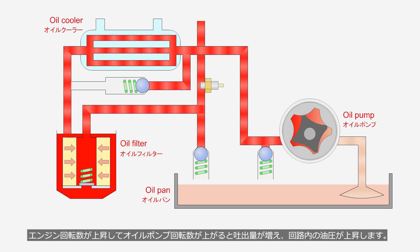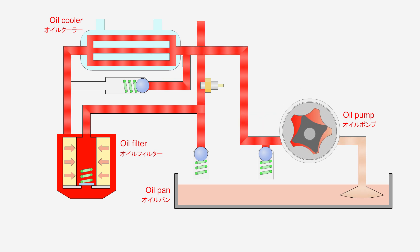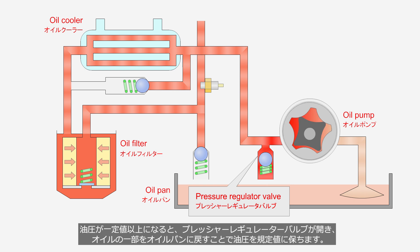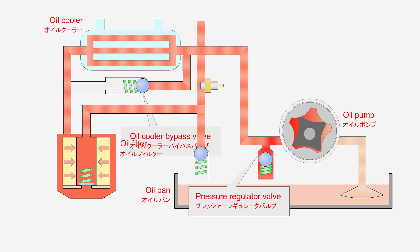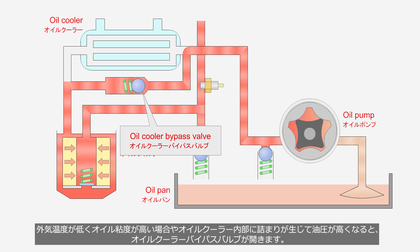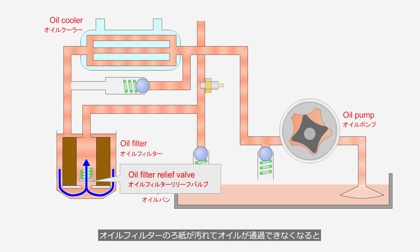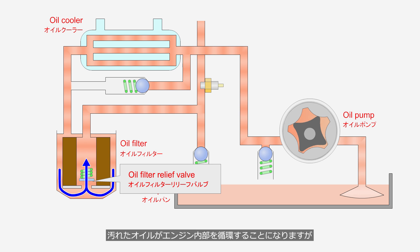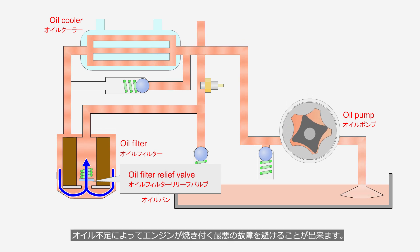As engine speed increases and the oil pump speed rises, the discharge volume increases, causing the oil pressure in the circuit to rise. When the oil pressure exceeds a certain value, the pressure regulator valve opens and some of the oil is returned to the oil pan to maintain pressure at the specified level. When the outside temperature is low and the oil viscosity is high, or if a blockage occurs in the oil cooler causing oil pressure to rise, the oil cooler bypass valve opens. If the filter element in the oil filter becomes clogged, oil can no longer pass through; the relief valve opens, allowing oil to bypass the filter and be delivered to various parts of the engine. Although dirty oil ends up circulating through the engine, it helps prevent the worst-case scenario of engine seizure due to oil starvation.